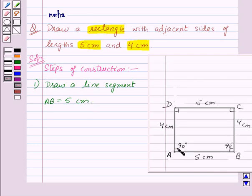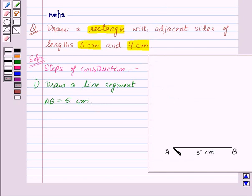Now we have angle A equal to 90 degrees. So let us draw an angle of 90 degrees at point A.